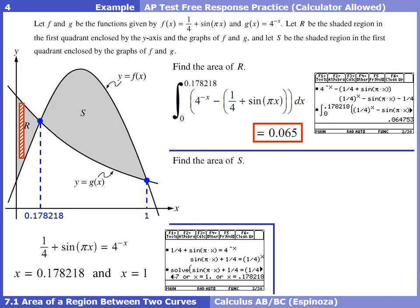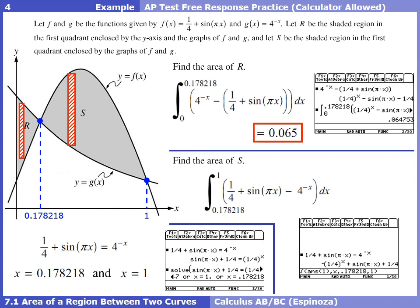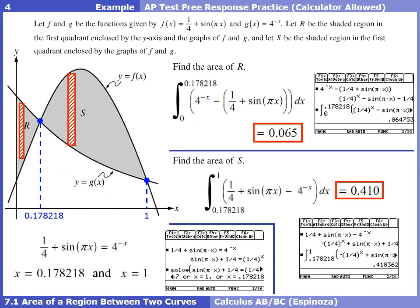For the area of S, integrate from 0.178218 to 1. Now the top function is f (with the sine) and the bottom is g (4^(−x)). Enter this integral into the calculator with lower bound 0.178218 and upper bound 1. The calculator gives 0.410362. Rounded to three decimal places, the area of S is 0.410.